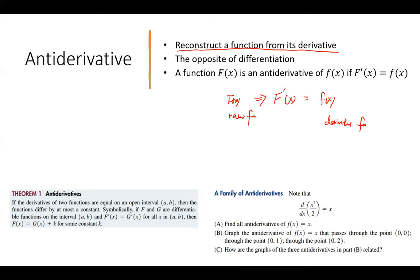Now we're going backwards. Based on the derivative function, how can we reconstruct the raw function? So basically, it's the opposite of differentiation. This function is an antiderivative of the derivative function if taking its derivative gives back that lower case f of x.